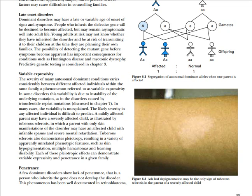In certain people the gene is going to be expressed at a low level, and in other people it is going to be expressed very highly. An example of variability can occur in autosomal dominant diseases like tuberous sclerosis, which also demonstrates pleiotropy. Pleiotropy means resulting in variable, apparently unrelated phenotypic features — some people may have a very severe disease while others may have very mild disease.